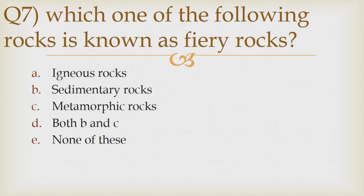Question number 7. Which one of the following rocks is known as fiery rocks? Option A: Igneous rock. Option B: Sedimentary rocks. Option C: Metamorphic rocks. Option D: Both B and C. Option E: None of these. The correct answer is Option A — Igneous rocks.